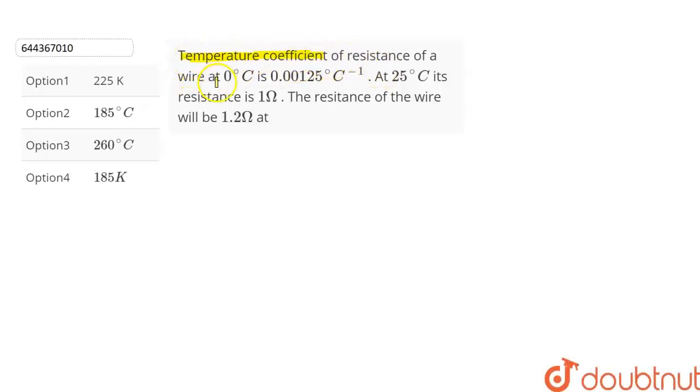of resistance of a wire at 0 degree Celsius is 0.00125 degree Celsius inverse. At 25 degree Celsius its resistance is 1 ohm. We have to find the temperature at which the resistance of the wire will be 1.2 ohms.